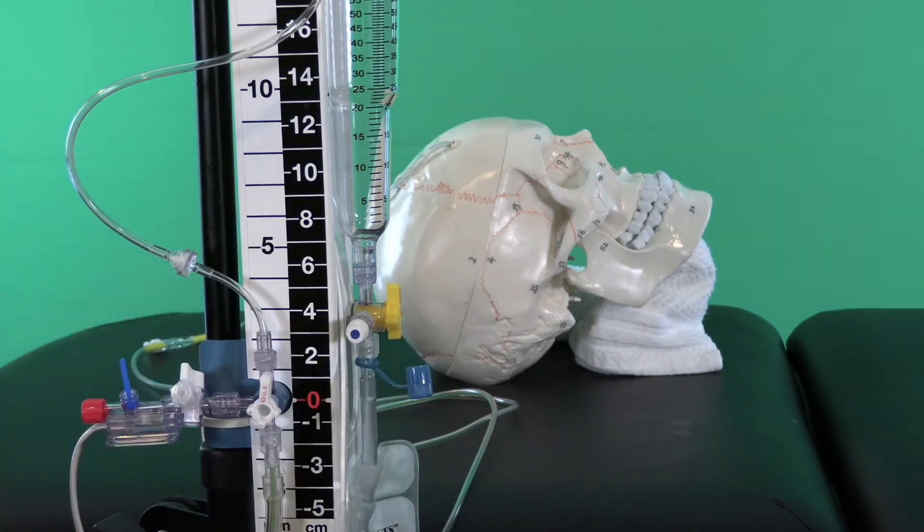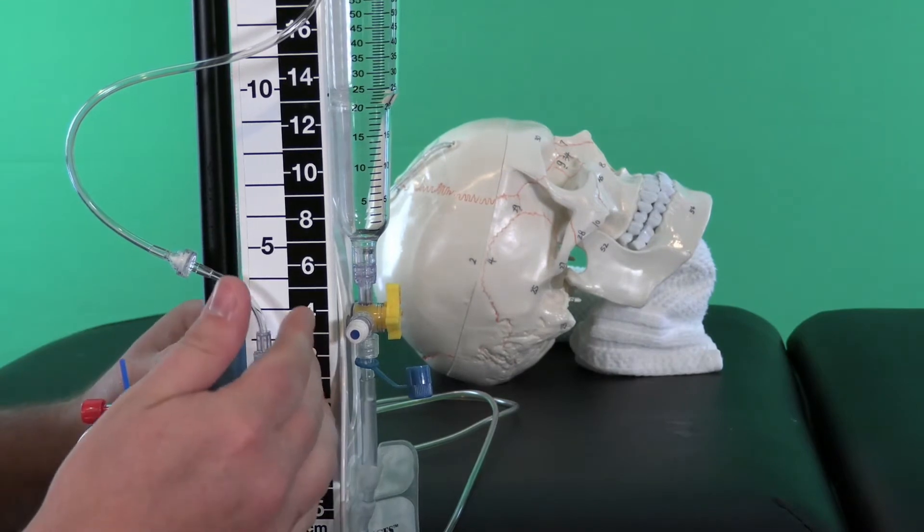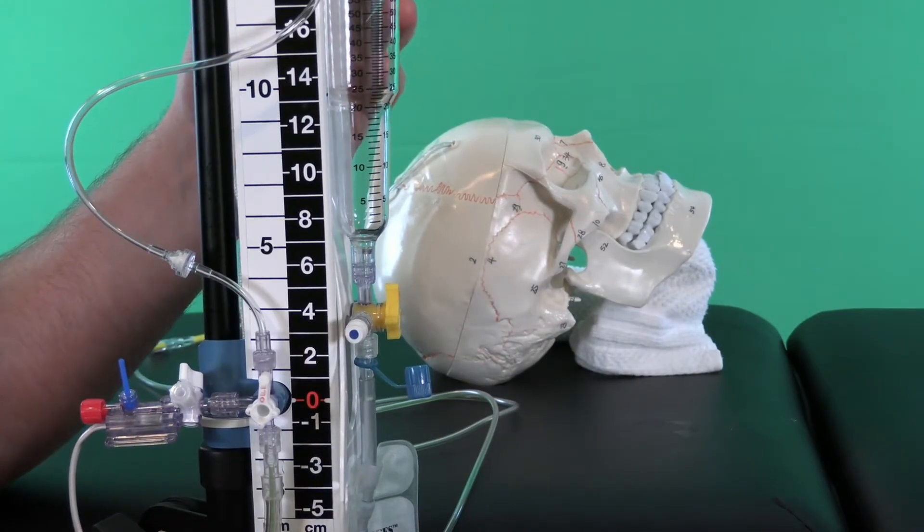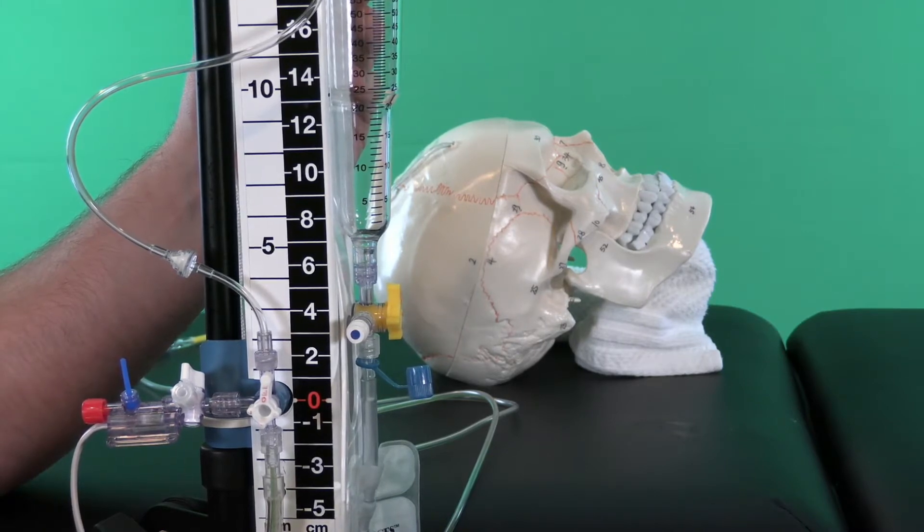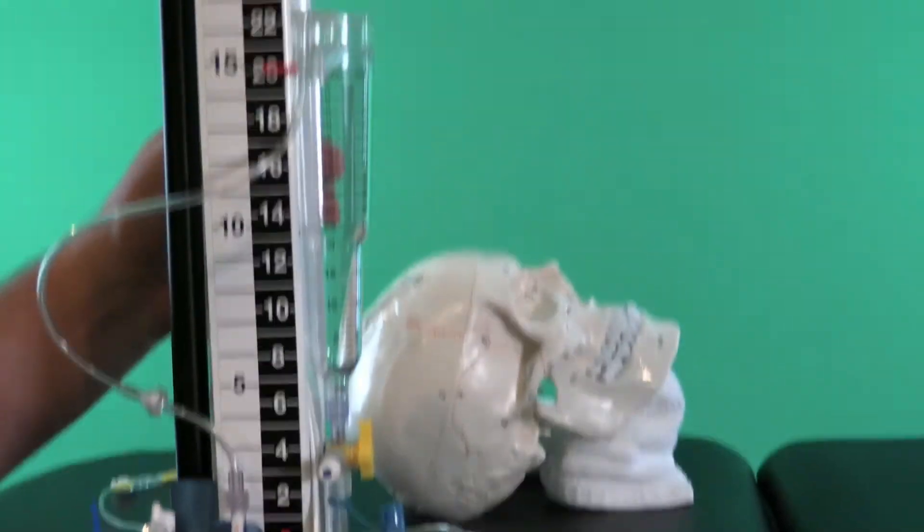Basically, the distance from this collection chamber to the transducer will determine what ICP it drains at. You have two—I'm going to go up a little higher so you can see this.